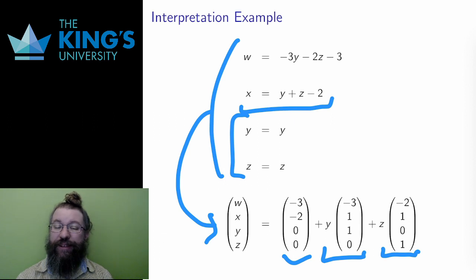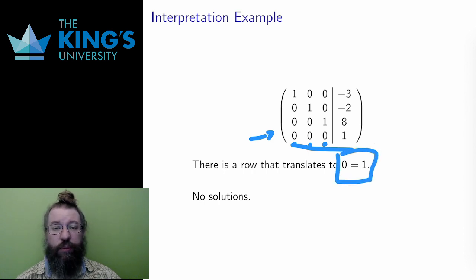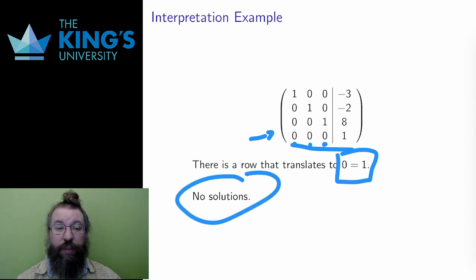Finally, consider this matrix. This is like the earlier matrix, but the last row is new. If I translate this last row, there is only zero to the left, zero x plus zero y plus zero z, and there is one on the right. This translates to zero equals one. This is not possible, and there are no solutions to the system represented by this matrix.